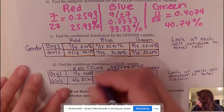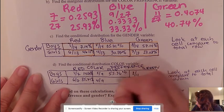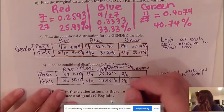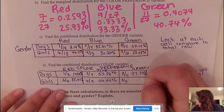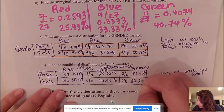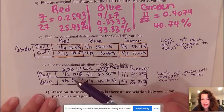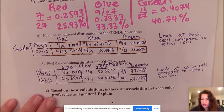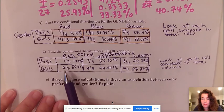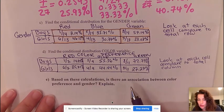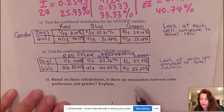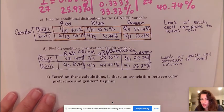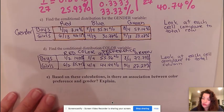So 5 out of 9 is 55.56% and this would give us 44.44%. Converting this to percentage is 72.73% and 27.27%. So this completes the conditional distribution for the color variable. Now why are we calculating conditional distribution? Because many times we are asked that based on these calculations, if there is an association between any two variables. In this case we are asked to find the association between color preference and gender.